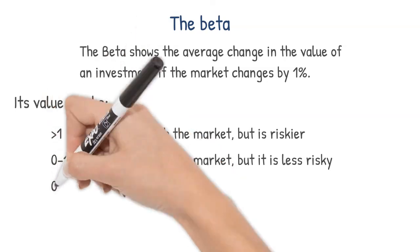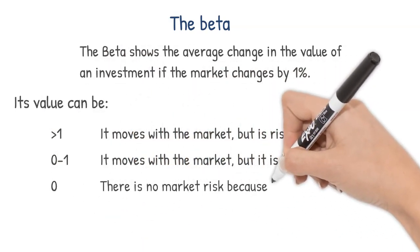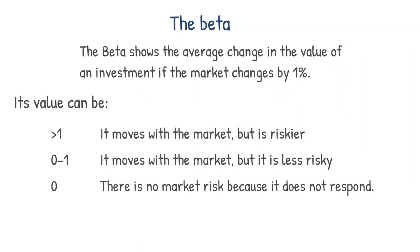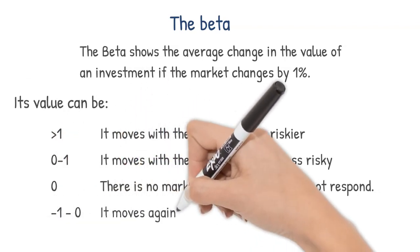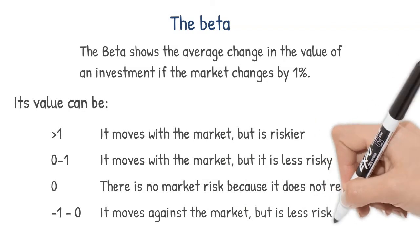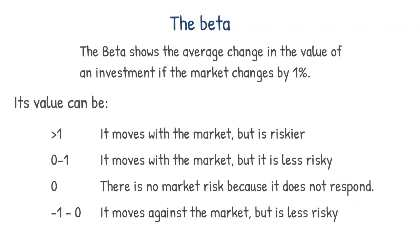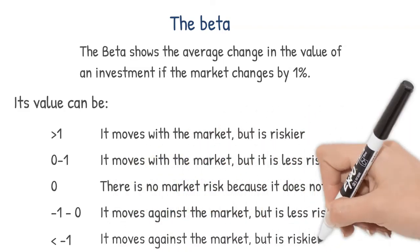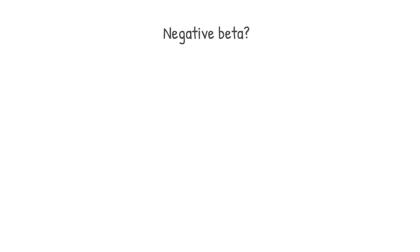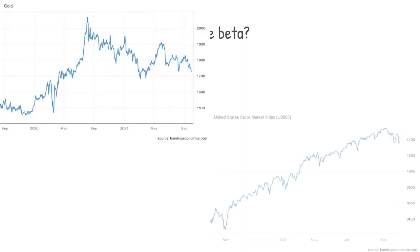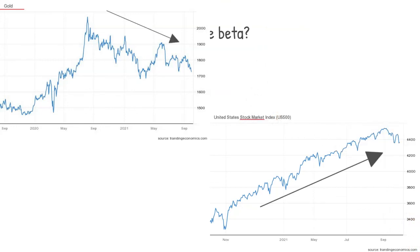If beta is 0, the investment has no market risk, so it does not react to movements. This does not make it risk-free, as it may still have an individual risk. If beta is between minus 1 and 0, then the investment moves in the opposite direction to the market, but is less risky than the market. If beta is below minus 1, it moves in the opposite direction to the market and has above average risk. Negative beta is typical for counter-cyclical investments, for example gold, which are subject to the opposite of the market.